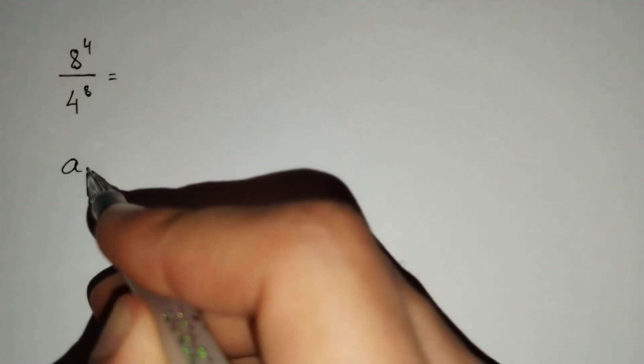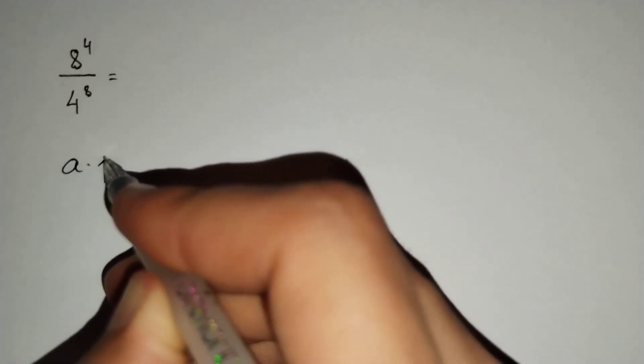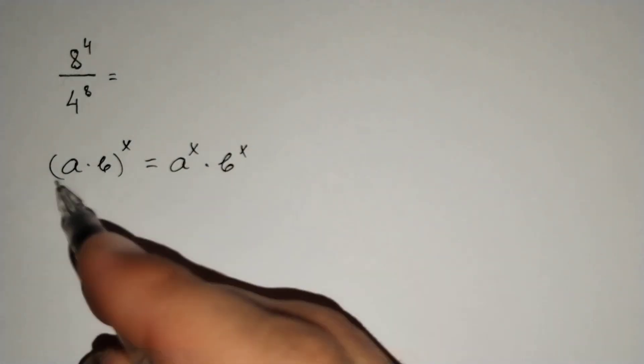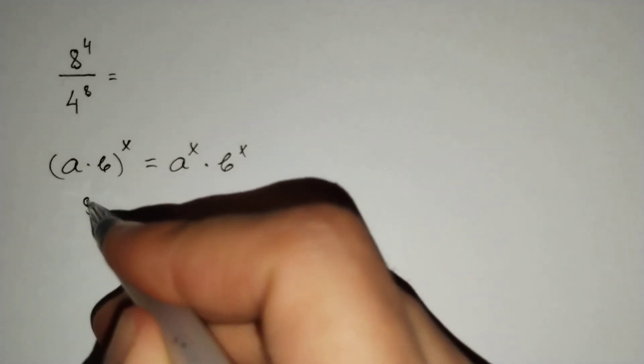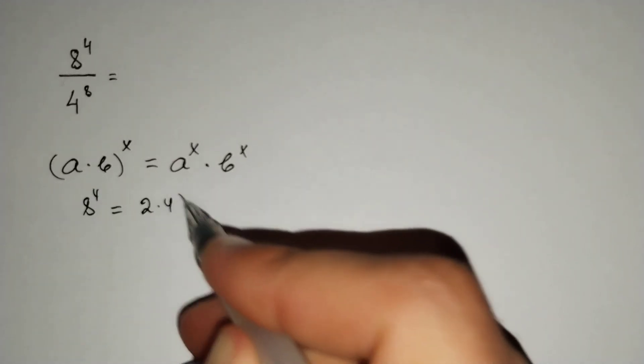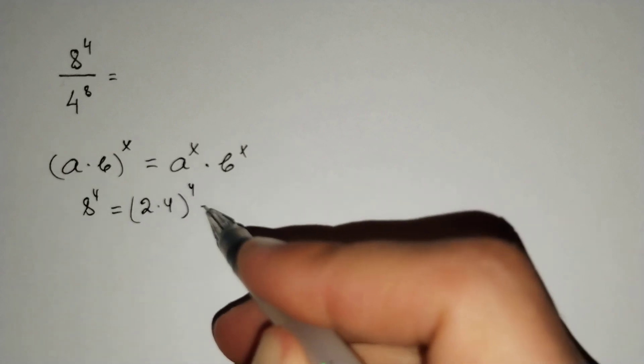Firstly, we know that (a·b)^x equals a^x · b^x. For this formula, 8^4 equals (2·4)^4, and this is equal to 2^4 · 4^4.